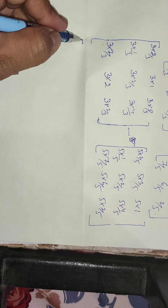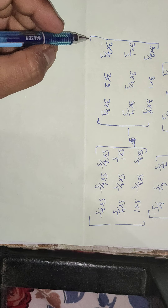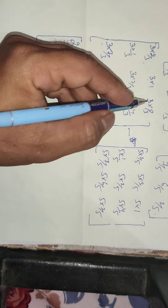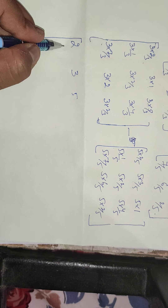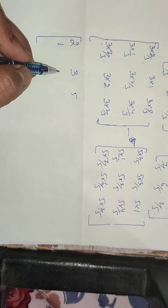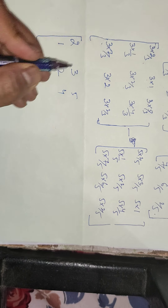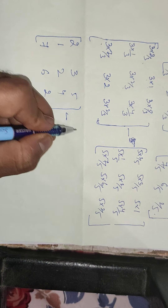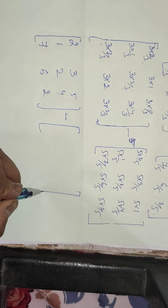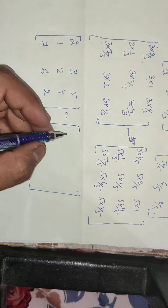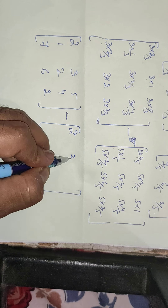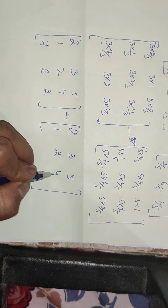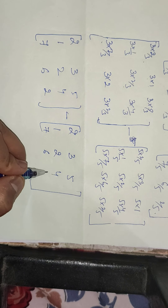So the values will simplify: the 3s cancel in 3A giving us 1, 2, 4, 7, 2. The 5s cancel in 5B giving us 2, 3, 5, 1, 2, 4, 7, 6, and 2.